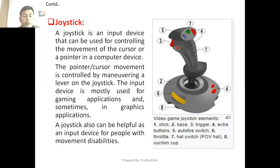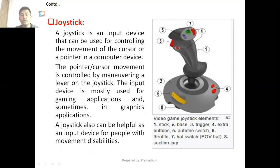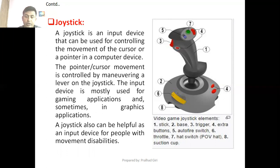A joystick can also be helpful as an input device for people with movement disabilities — those persons who cannot use all their fingers. You can see on the picture the different components of a joystick: a stick, base, trigger, extra buttons or fire switch, hat switch, and suction cup. These are all the components of a joystick.